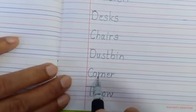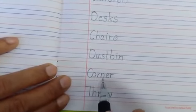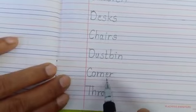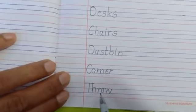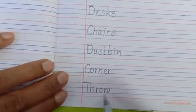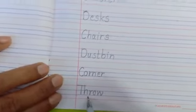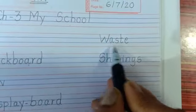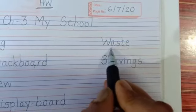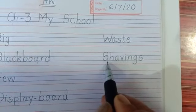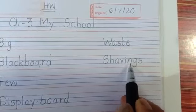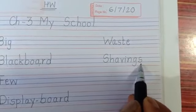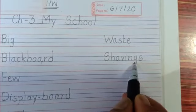C-O-R-N-E-R — Corner. T-H-R-O-W — Throw. W-A-S-T-E — Waste. S-H-A-V-I-N-G-S — Shavings.